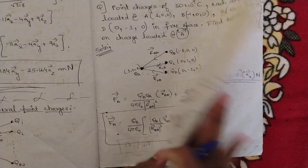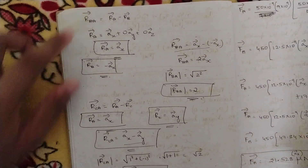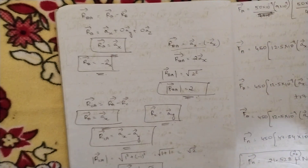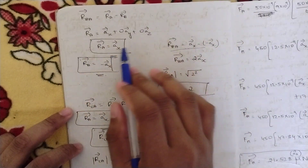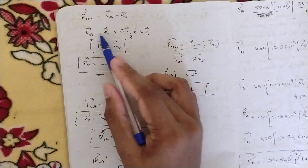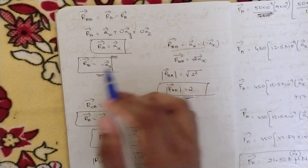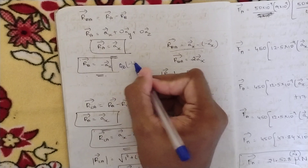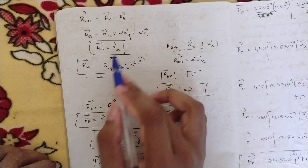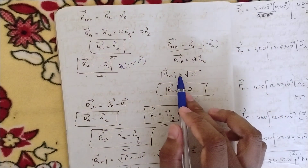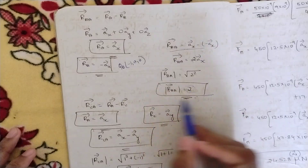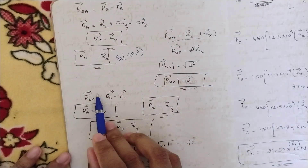First, find rBA = rA − rB. rA corresponds to point A(1,0,0), so rA = ax. rB corresponds to point B(−1,0,0), so rB = −ax. Therefore rBA = ax − (−ax) = ax + ax = 2ax. The magnitude of rBA is √(2²) = 2. So rBA = 2ax and |rBA| = 2.